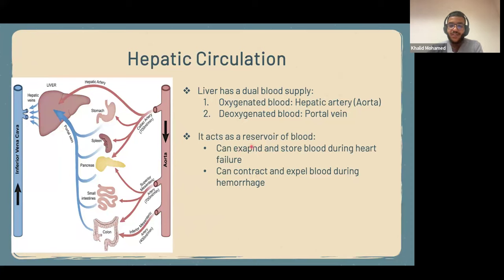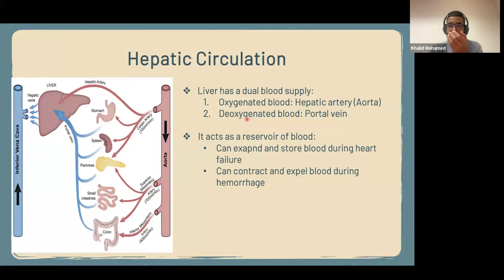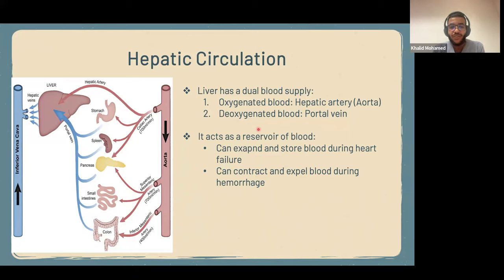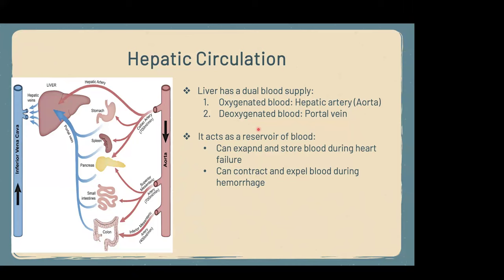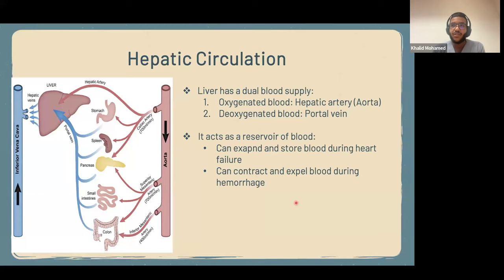The liver acts as a reservoir of blood, meaning it can expand and store blood as the body needs. For example, during heart failure, the heart is not pumping blood well, so there will be a huge buildup of blood in the venous system. We don't want that because it leads to edema. So the sinusoids in the liver expand in order to store more blood, taking away some from the circulation to prevent excessive buildup. Conversely, during a huge hemorrhage, the liver contracts to expel the blood it has stored into the circulation because the body needs the extra blood.